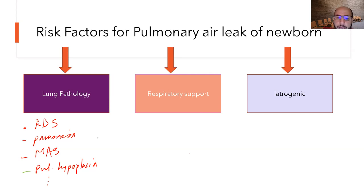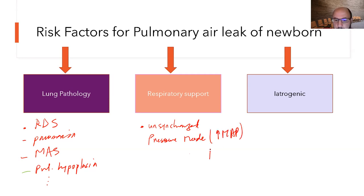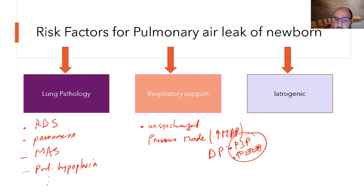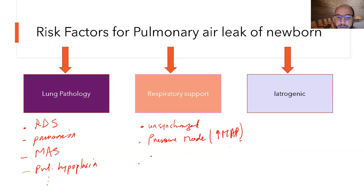Regarding respiratory support risks: unsynchronized ventilation, especially in pressure mode with high MAP — meaning high delta P or high PIP — increases the risk. Each time you go up on your settings in pressure support mode, there is always a chance of pneumothorax.